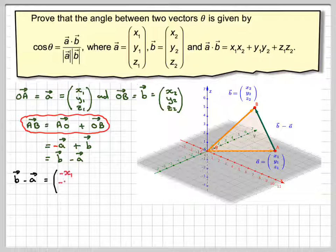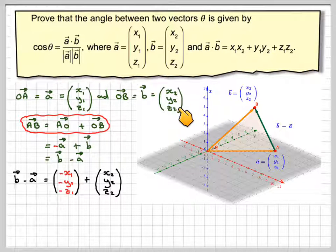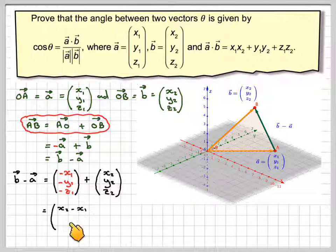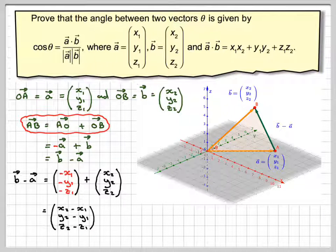So b minus a is going to be minus (x1, y1, z1) plus (x2, y2, z2), which comes down to (x2 minus x1, y2 minus y1, z2 minus z1). Just a word of warning about writing z — I normally put a line through my z's in order not to confuse it with a 2.